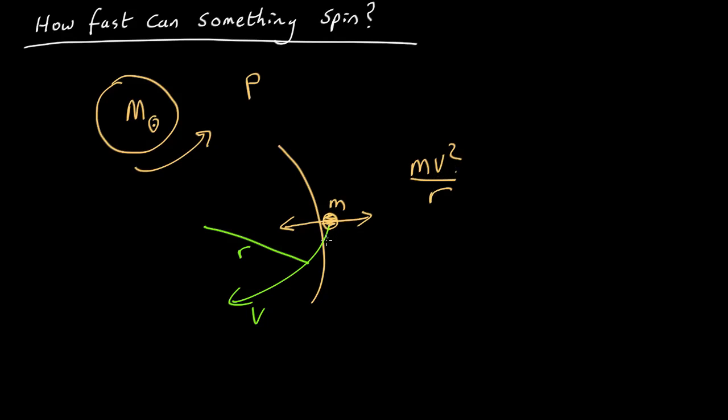So the critical dividing line, when things are just about to spin off, we'll set that equal to the gravity, given by the normal equation. Okay, so that's telling us, at balance, this is going to happen.